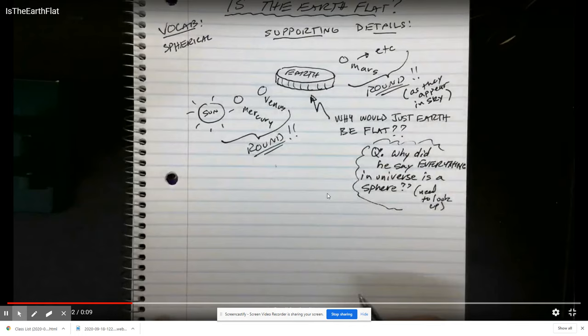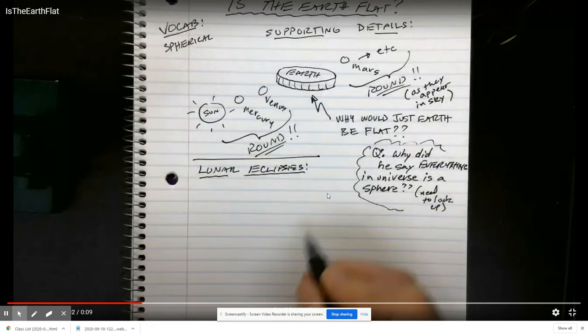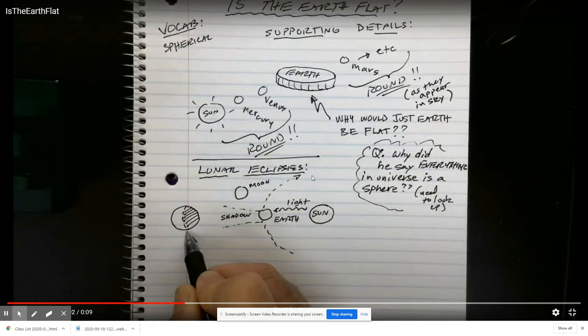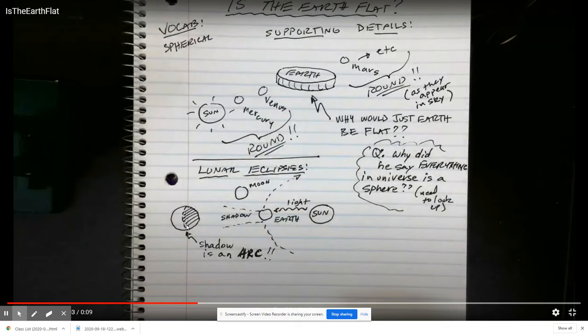So the next example we gave as a way to take apart the theory of the flat Earth, or the hypothesis of the flat Earth, is lunar eclipses, which essentially is happening every time the moon gets on the other side of the Earth from the Sun, which is about two times a month. As the moon is passing through the shadow of the Earth, it should have an arc-shaped shadow, and it does. When we look at it, we can see that it's an arc—it's either this way or it's going the other way, depending on what side of the Sun the Earth it's on.